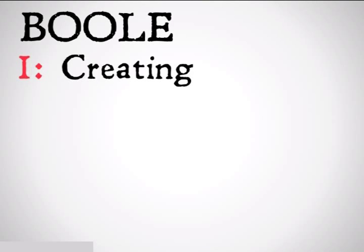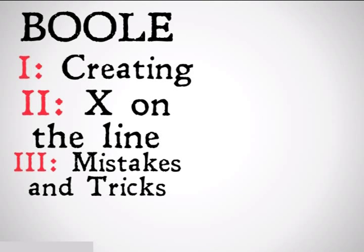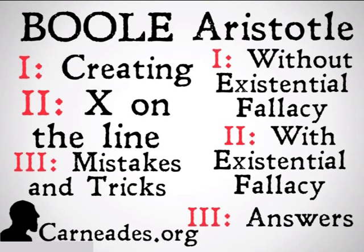That was Boole — X on the line. Next up is Mistakes and Tricks and Aristotelian Venn Diagrams. Watch this video and more at carnadies.org. And stay skeptical, everybody.